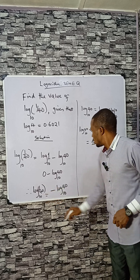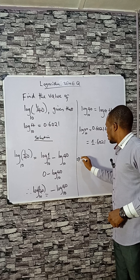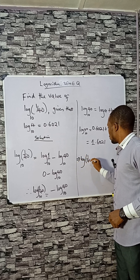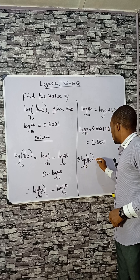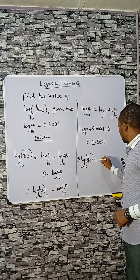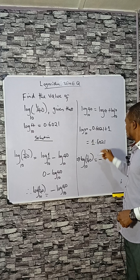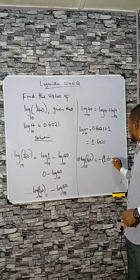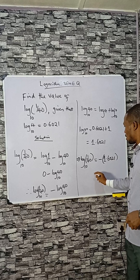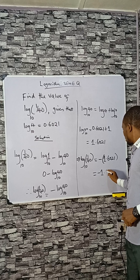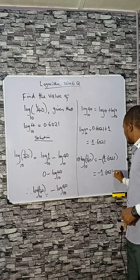Therefore, log(1/40) base 10 equals minus log 40, which is minus 1.6021. The answer is minus 1.6021.